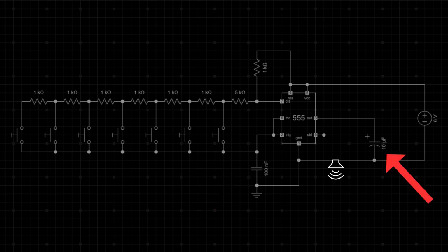The 10 microfarad capacitor connected to pin 3 or output transmits the signal to the speaker while blocking DC voltage. It ensures only AC variations or the audio signal reach the speaker.